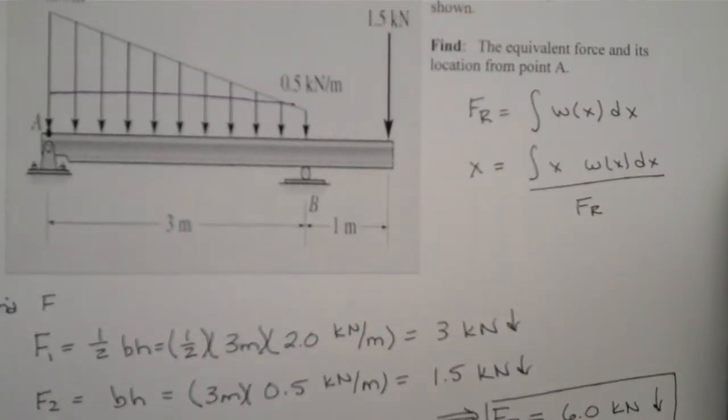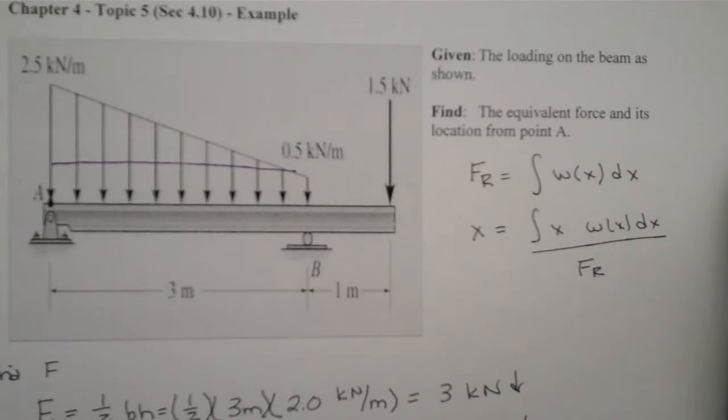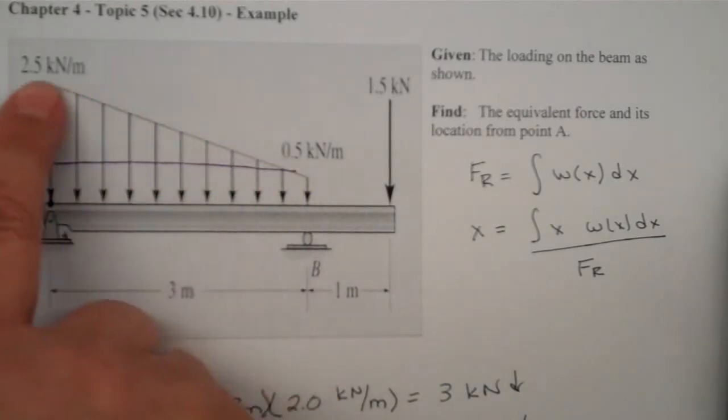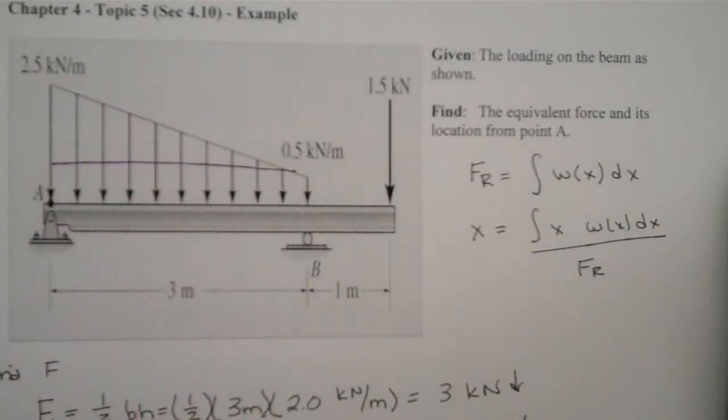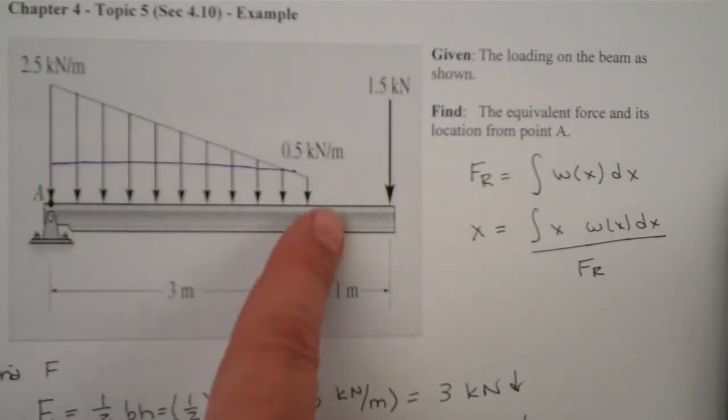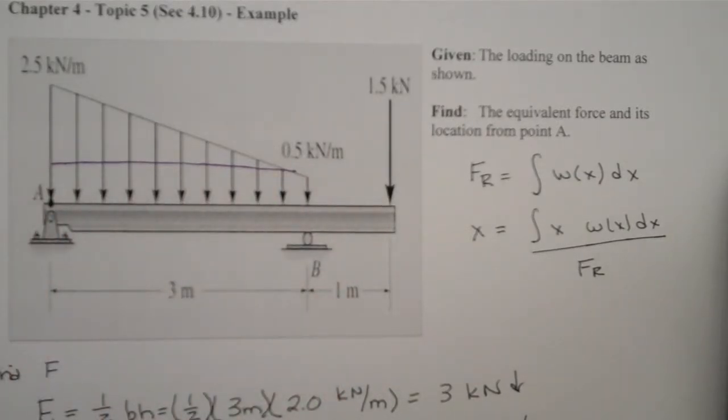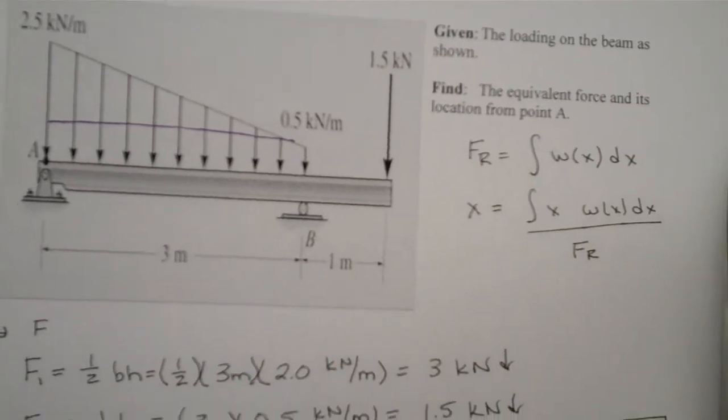So for us currently, to find our force, we're going to break this up into a rectangle, and to find the area of that rectangle, we're going to take base times height, and that should give us what the net force is for the triangle. And then for the rectangle, we'll again take base times height, and our third force is already given to us.